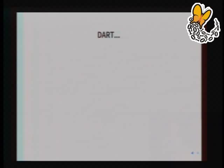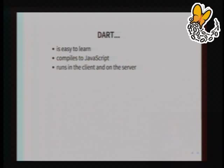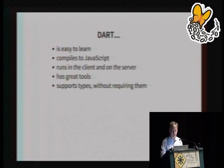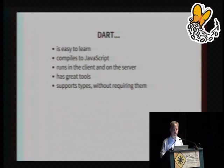So what is Dart? It's easy to learn and looks a lot like everything else you know. It compiles to JavaScript, which means it's good for both client-side and server-side applications. It has really great tools and is somewhat mature. It supports types without requiring them — meaning you can give all sorts of control to the programmer, which will be reflected by the IDE. The IDE will know that this object can have these 17 methods and display them in a pop-up if you give types.